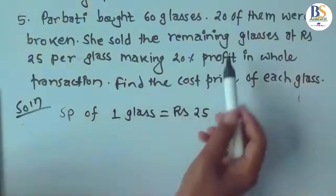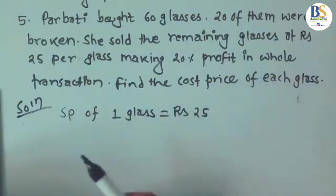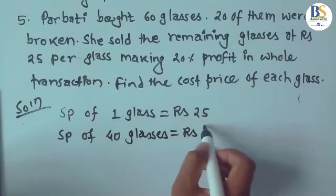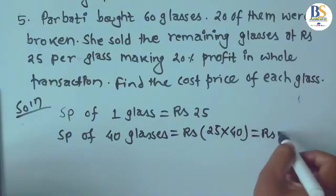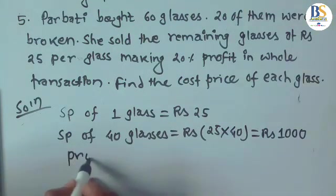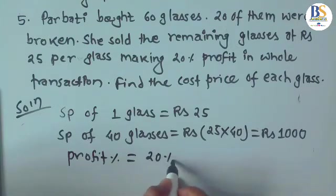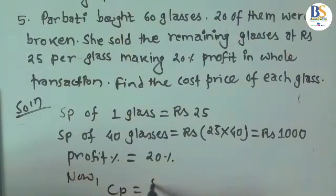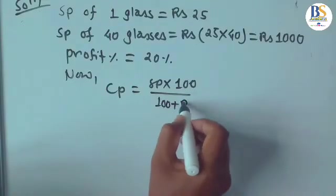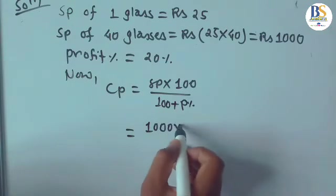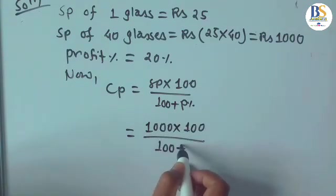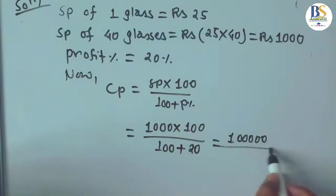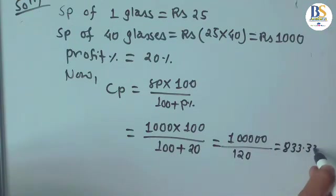SP of 40 glasses = RS 25 × 40 = RS 1,000. Profit percent is given as 20%. Since SP and profit percent are known, we can find CP: CP = SP × 100 / (100 + profit%) = 1,000 × 100 / (100 + 20) = 100,000 / 120 = RS 833.33.